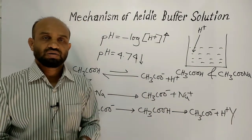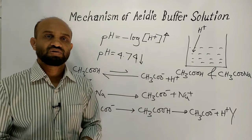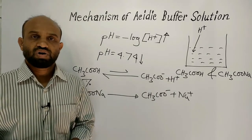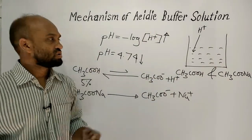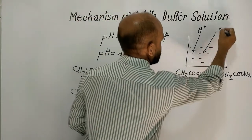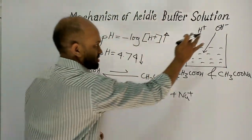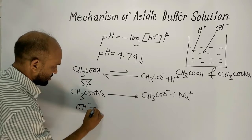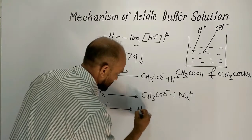Now let's see how the pH value remains constant when a small amount of base is added to the acidic buffer solution. When base is added, the hydroxide ion combines with the proton and as a result water is formed.